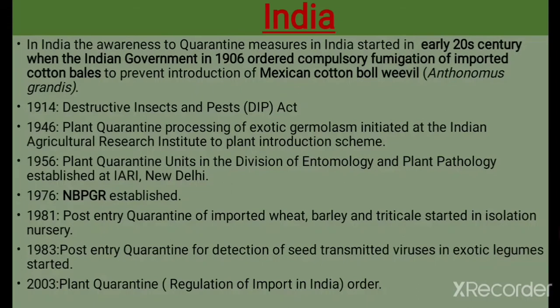Regarding laws and various acts in India: awareness of quarantine measures in India started in the early 20th century when the Indian government in 1906 ordered compulsory fumigation of imported cotton bales to prevent introduction of the Mexican cotton boll weevil, Anthonomus grandis. In 1914, the Destructive Insects and Pests (DIP) Act was established. In 1946, plant quarantine processing of exotic germplasm was initiated at the Indian Agricultural Research Institute (IARI).